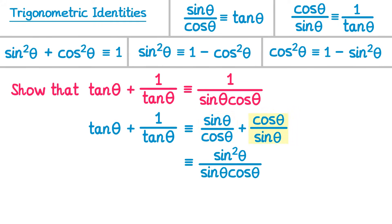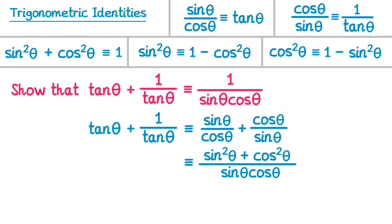For the second fraction, multiply by cos theta over cos theta, giving cos squared theta over sin theta cos theta. Now combining into one fraction: sin squared theta plus cos squared theta, all over sin theta cos theta. Since sin squared theta plus cos squared theta equals 1, we replace the numerator with 1, giving 1 over sin theta cos theta — which matches the right hand side.